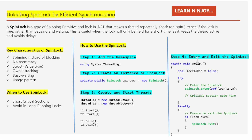Step number four: enter and exit the spin lock. In the DoWork method, the Enter and Exit methods of spin lock are implemented. First a boolean variable named lockTaken is declared and assigned the value false. This variable tracks whether the thread successfully acquired the spin lock.